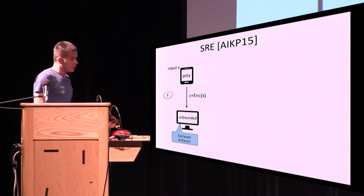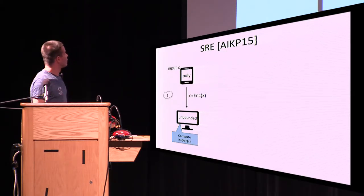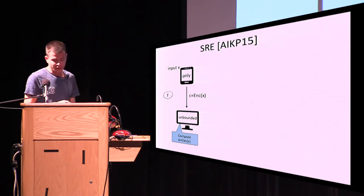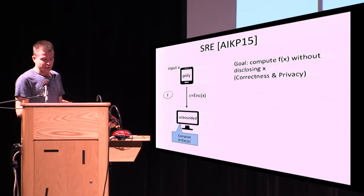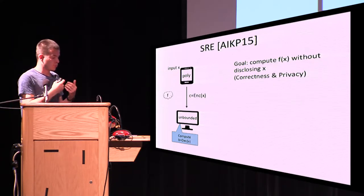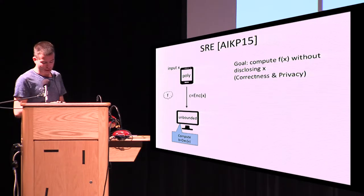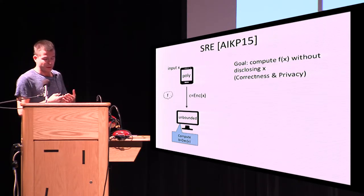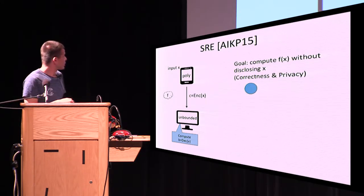Now I will briefly overview the setting and then prove some results. In the SRE setting, you have a computationally limited client who wants to outsource computation to an unbounded server. The goal is to compute F of X without disclosing X. There is a correctness property — the output produced by the server with high probability equals F of X — and there is a privacy requirement, meaning the server learns nothing about the input except the output of the function on that input.